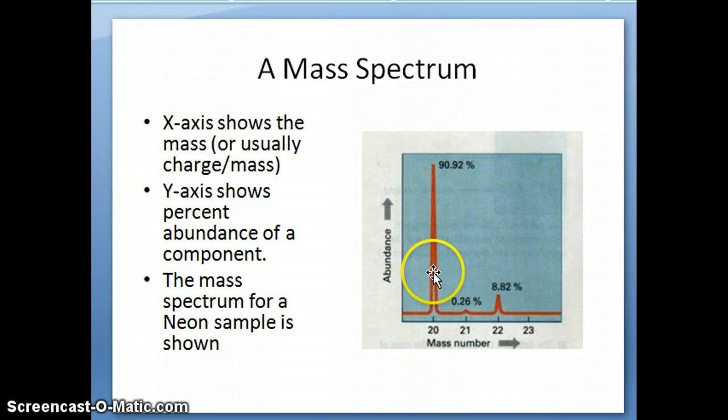And as you can see, for neon, you have, in this case, three different isotopes: one with a mass of about 20 atomic mass units, another one with about a mass of 21 amu, and another one with a mass of about 22, and as you can see here, they all have different abundances.